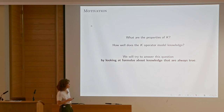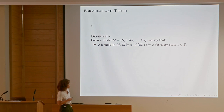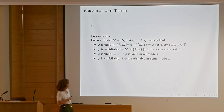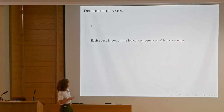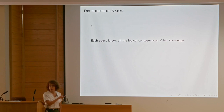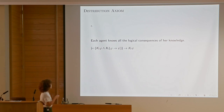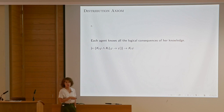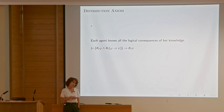We will try to answer this by looking at formulas about knowledge that are always true — what we call validity in logic. For instance, if an agent knows that φ and an agent knows that φ implies ψ, then the agent knows ψ. On the level of logic, great. On the level of human subjects, not so great — because this is closure on consequence: an agent always knows all the logical consequences of what they know.